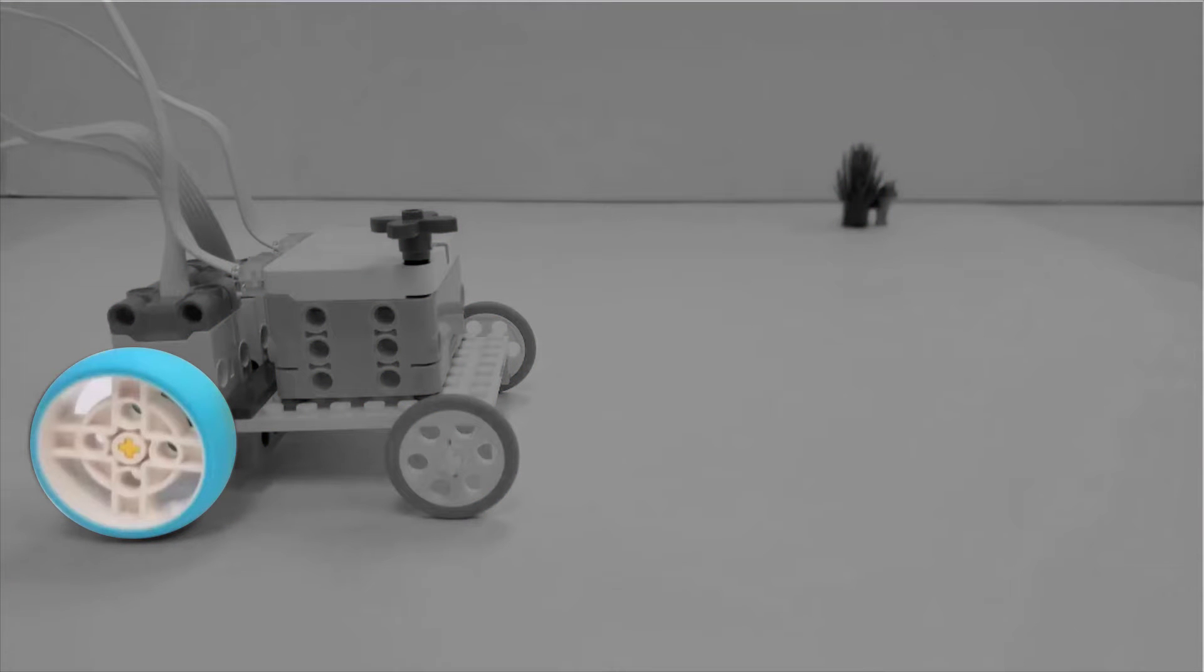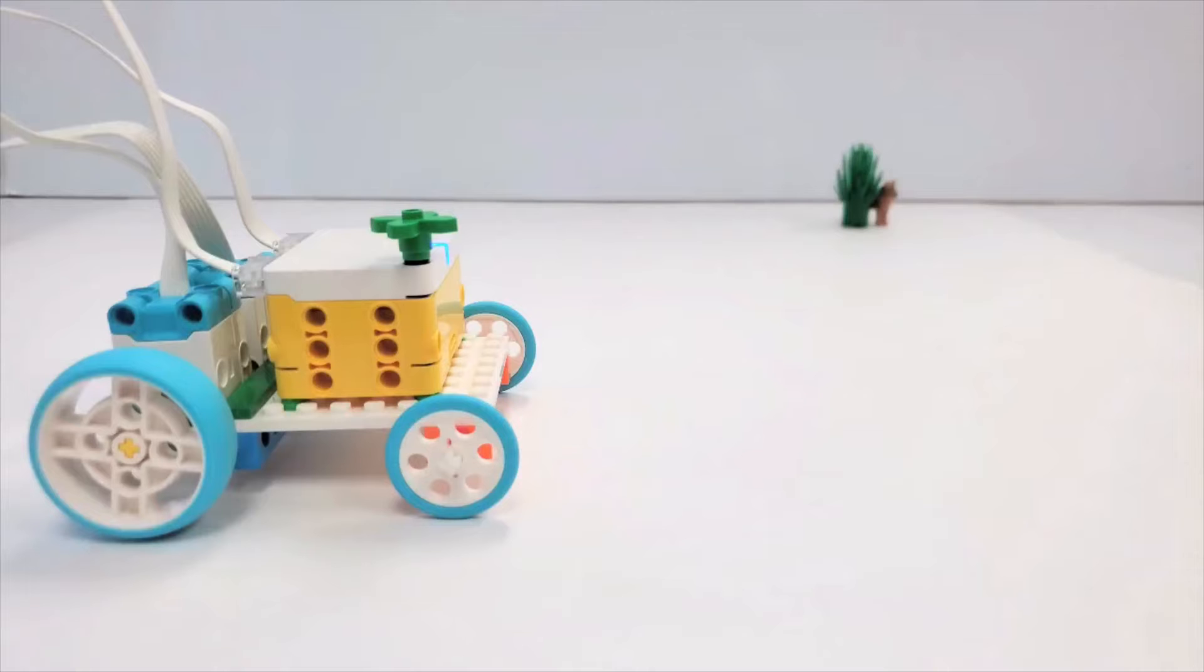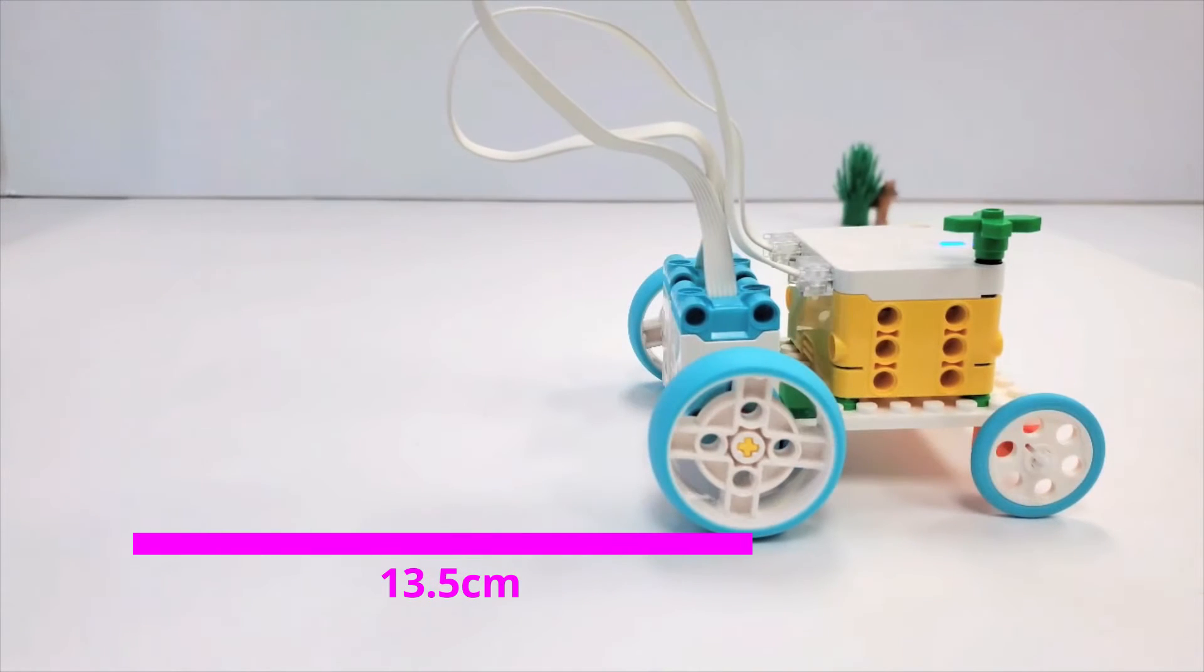because they are connected to the motors that provide power to move. When we drove Iris forward for a single rotation, it covered a distance of 13.5 centimeters.